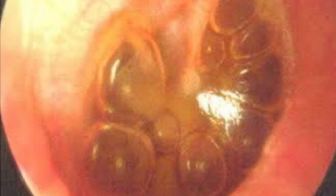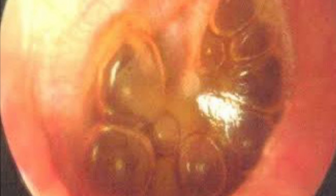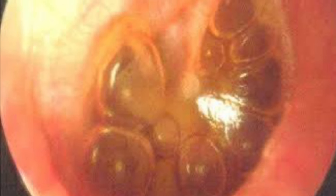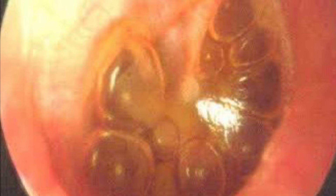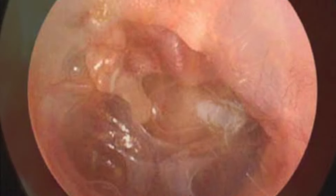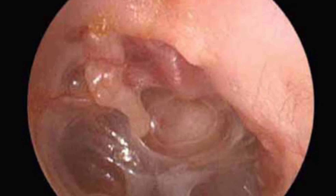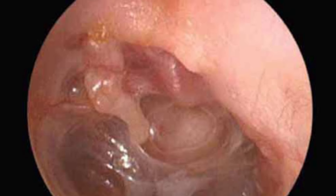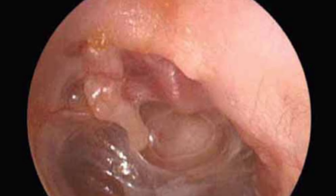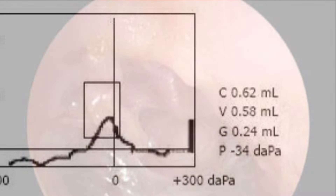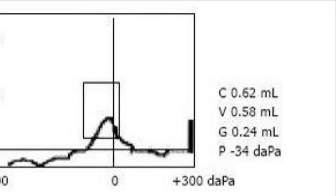For a more detailed view, otomicroscopy is often used, especially in clinical settings. This technique provides a magnified view of the tympanic membrane, making it easier to detect subtle changes like thinning or localized areas of retraction.